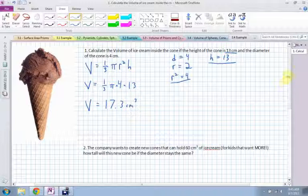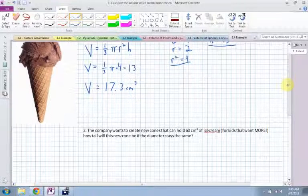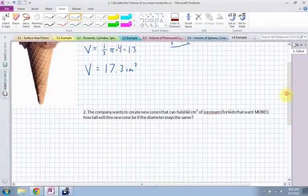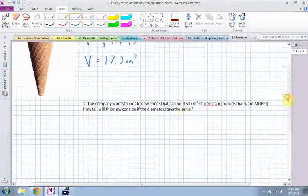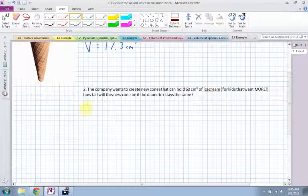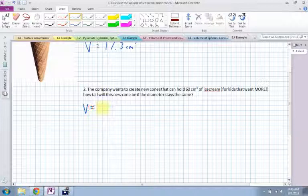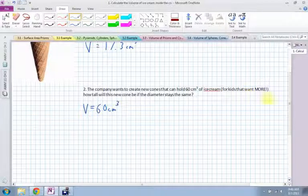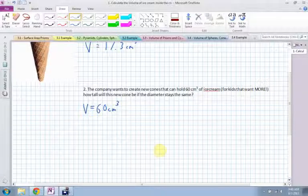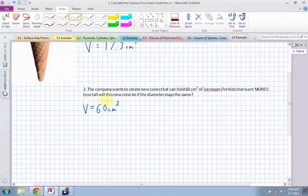Okay, so that's how to find the volume. The next question says, the company wants to create new cones that can hold 60 centimeters cubed. Now what it's giving us this time is actually the volume. So the volume is 60 centimeters cubed. You think you're done, but you're not. Kids want more. They want more ice cream. They want them to hold more. So it says, how tall will this new cone be if the diameter stays the same?